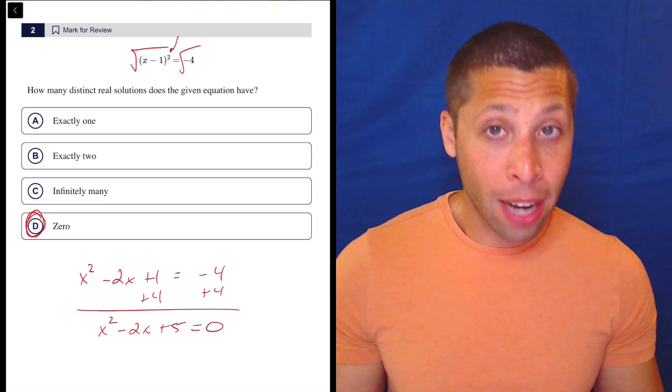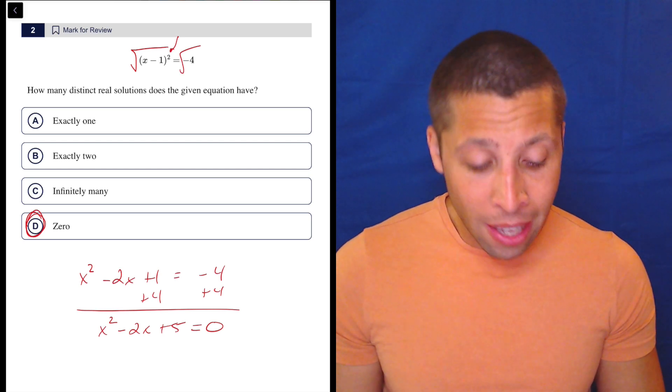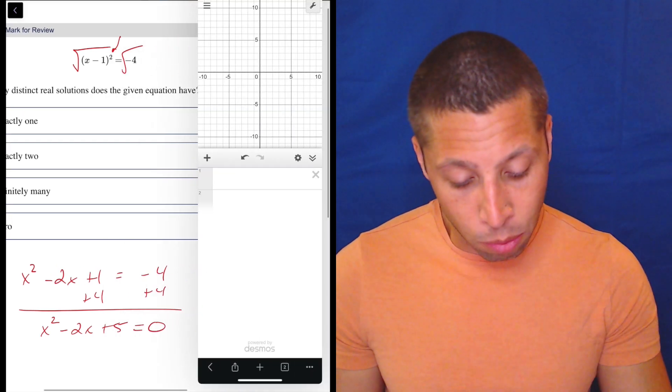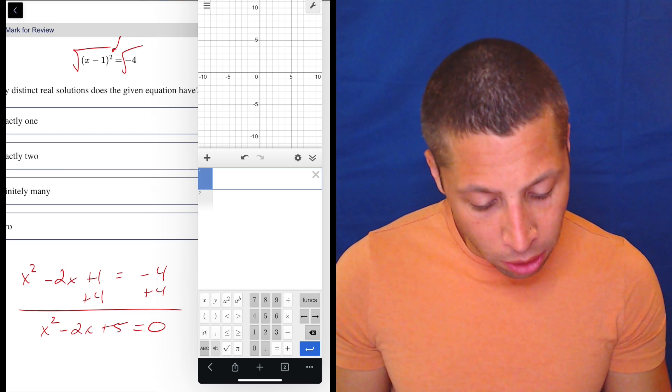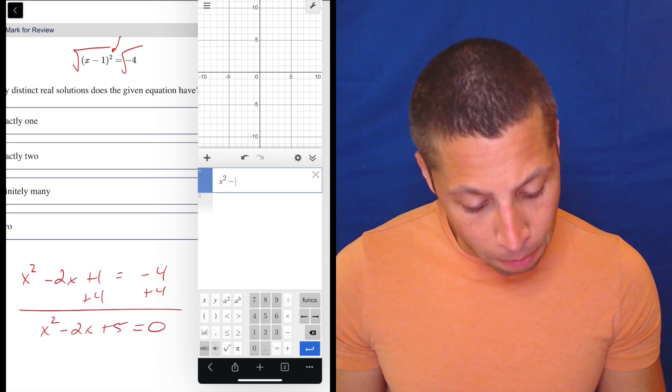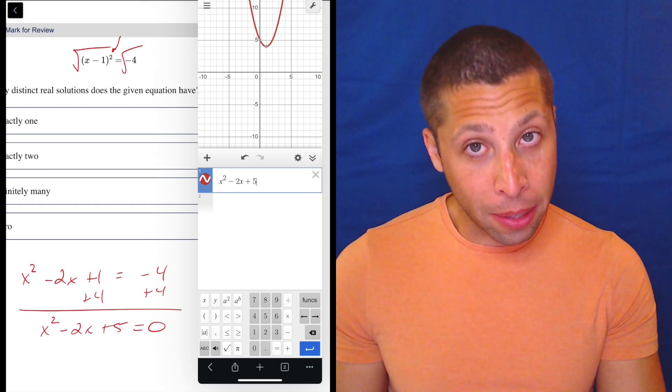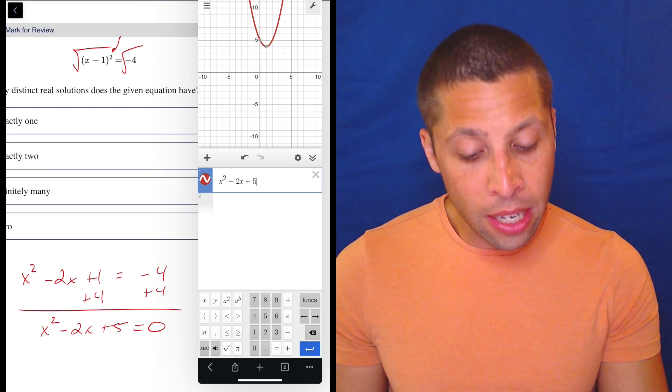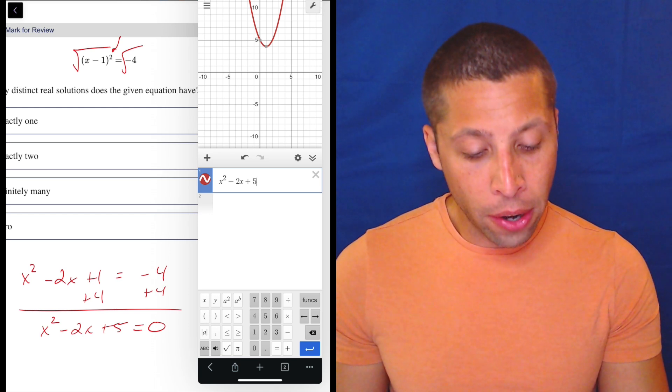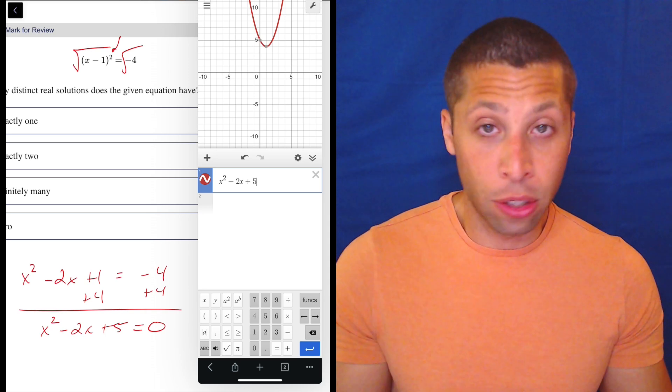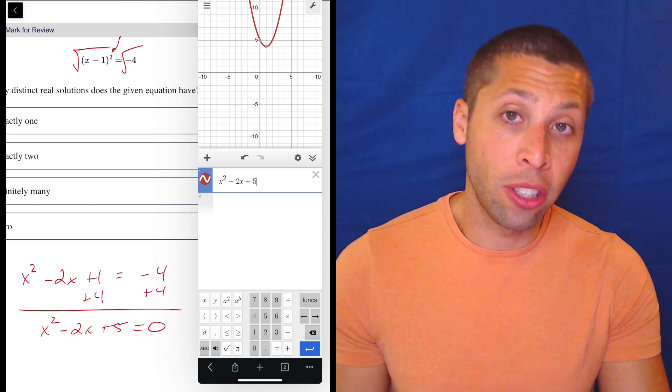Now, that's not going to be factorable. So what are we going to do? Are we going to go to the quadratic formula? Generally speaking, I'd say these are cases where we would go to Desmos. So we could go, at this point, x squared minus 2x plus 5, and we have a parabola, right? So we can already see when it's in this form that there is no solution because it's not touching the x-axis. We can see it's curving away.